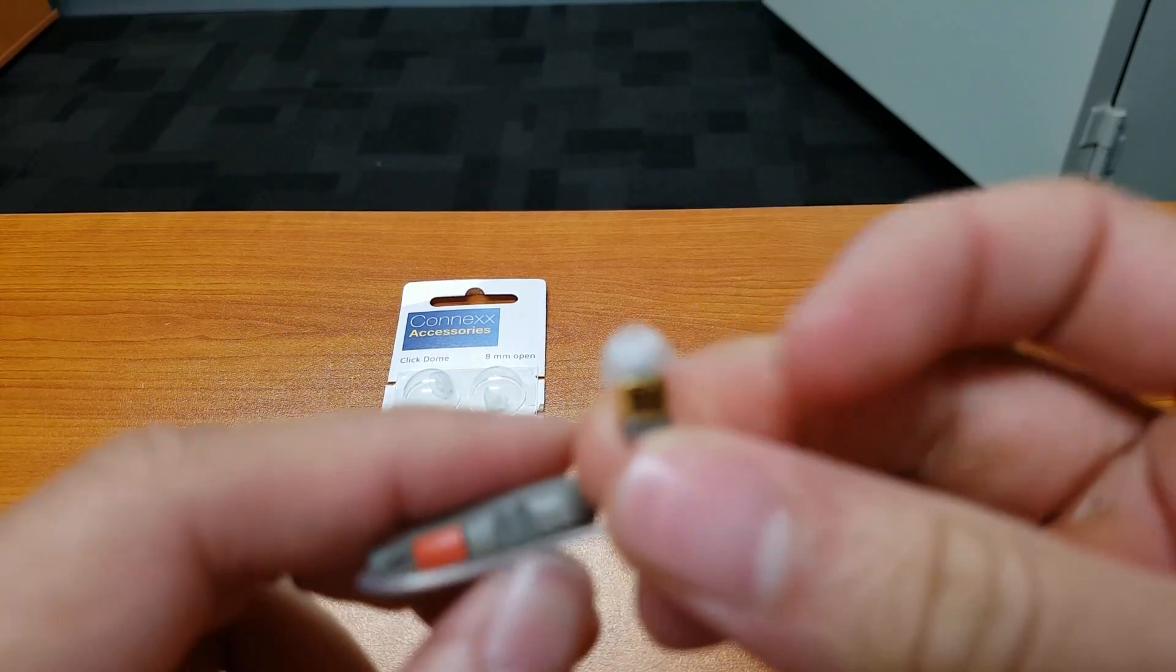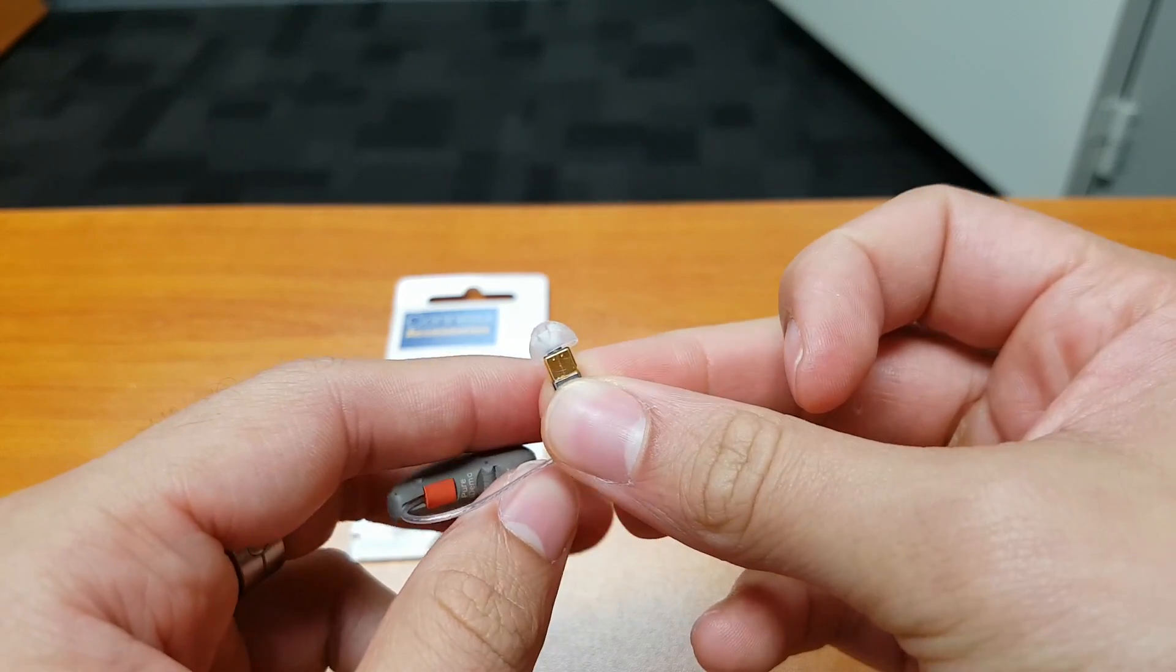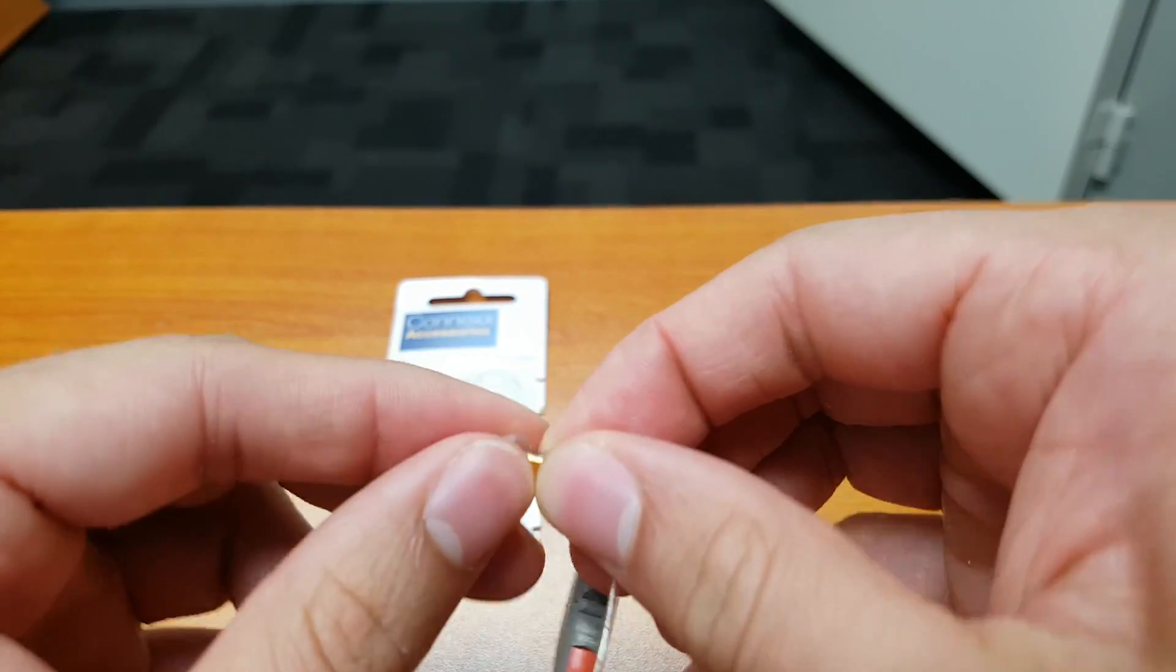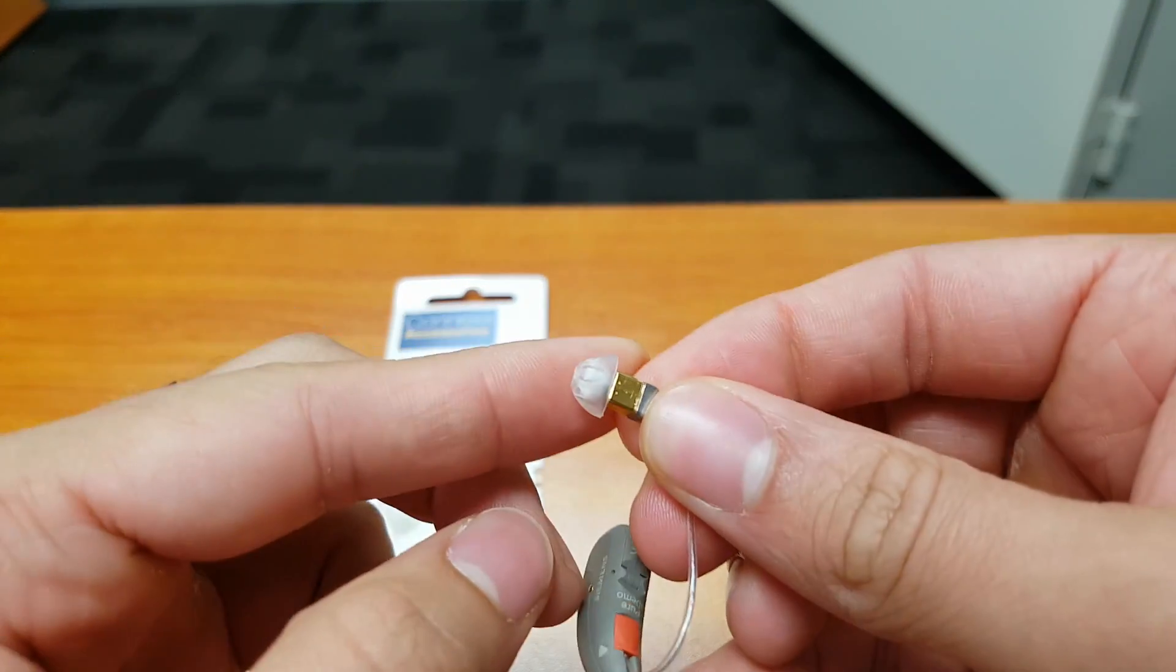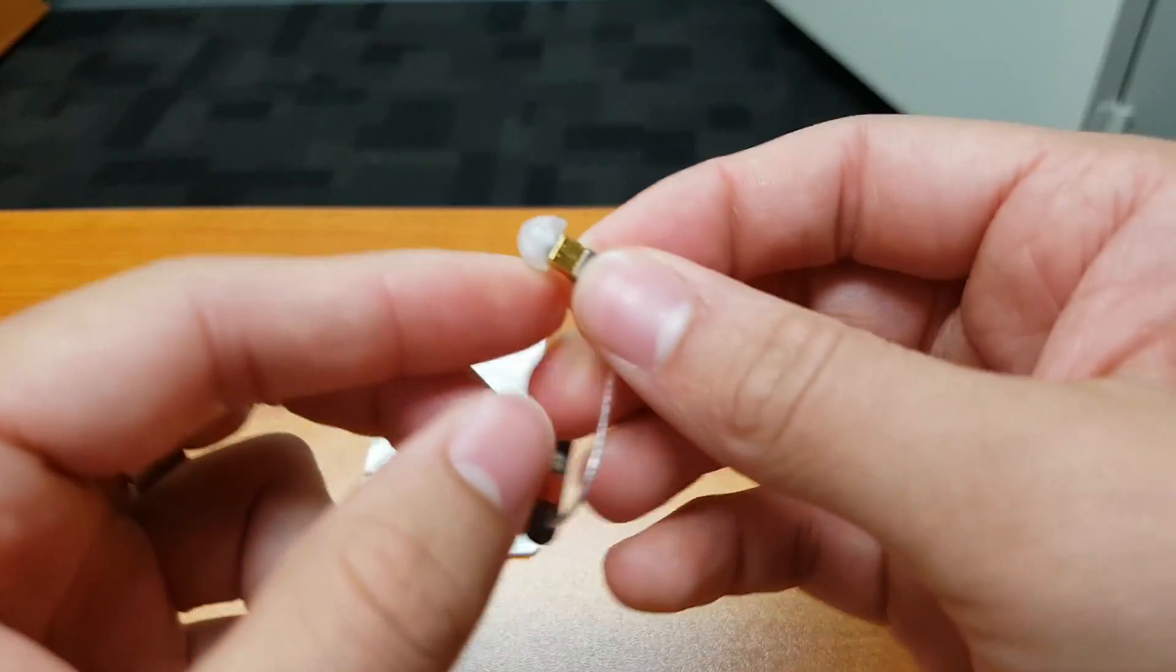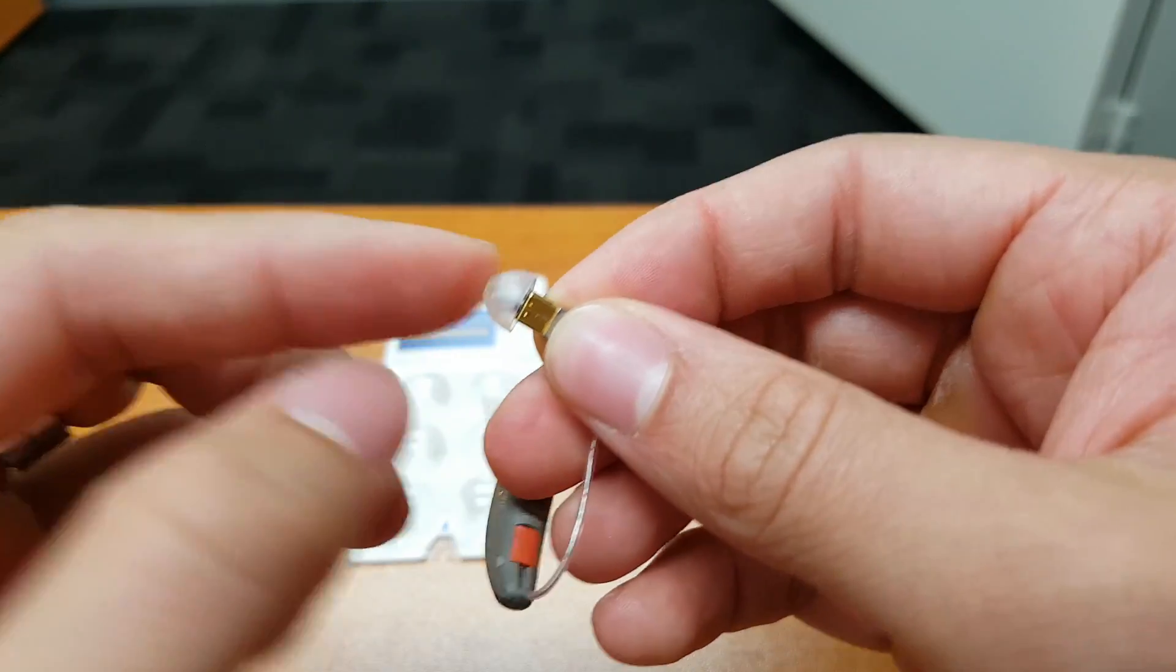So if we have a closer look at the dome, it's quite a firm fit. If I give that a bit of a pull, that dome is not going anywhere. What happens is that rubber dome clicks into place.